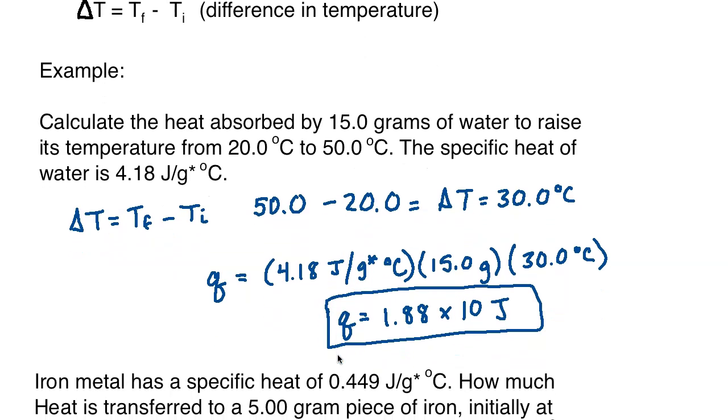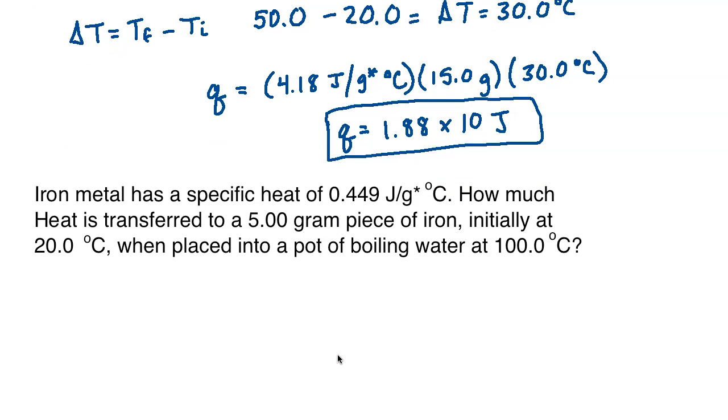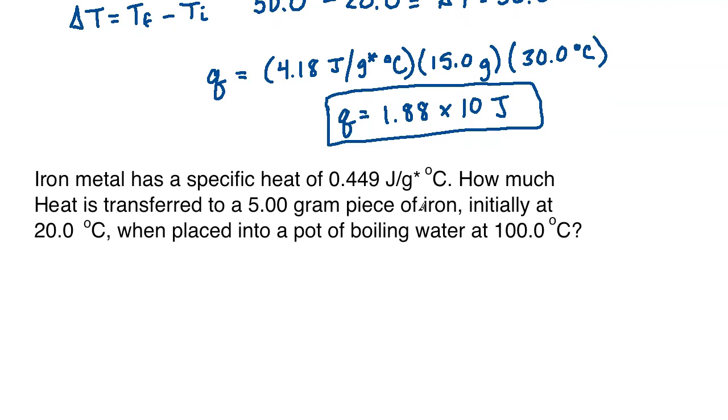Let's go ahead and try one more. Now we have iron metal. Iron metal has a specific heat of 0.449 joules per gram times Celsius. Now notice, I just want to point out here, the iron's specific heat is much lower, and that kind of makes sense. If you think about metal, metal is pretty conductive to heat, especially iron, whereas water is fairly robust against heat. It takes a lot of time and energy to heat the water up. A smaller value here logically makes sense because what we're saying is you need a lot less energy to get a gram of iron to go up by 1 degree Celsius. So how much heat is transferred to a 5 gram piece of iron that is initially at 20 degrees Celsius when placed into a pot of boiling water at 100 degrees Celsius?